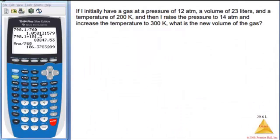Okay, if I initially have a gas at 12 atmospheres and a volume of 23 liters and a temperature of 200 K, then I raise the pressure to 14 atmospheres and increase the temperature to 300 K, what is the new volume of the gas? So lots of different ways to attack these gas law problems. You can do PV over T equals PV over T. These are initial conditions, these are the final and solve.